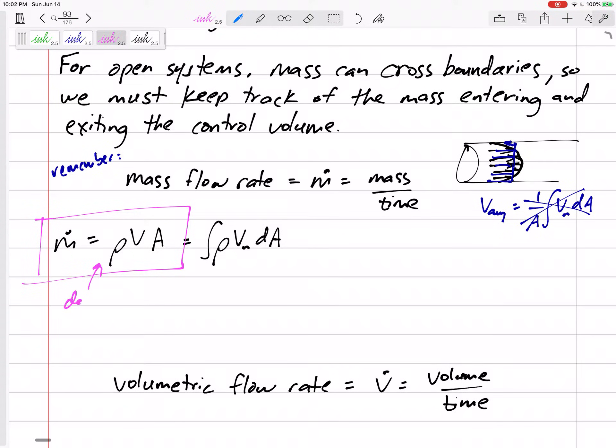Again, we're probably not going to need to do that. So let's say m dot is rho v a, where rho is the density of the fluid, v is the velocity of the fluid. This would be the average velocity of the fluid. This would be the velocity normal to the cross-sectional area, which just means the velocity in the direction of the pipe or the inlet. And a is the cross-sectional area.